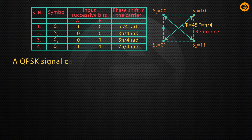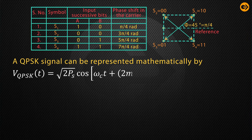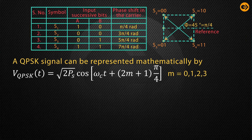A QPSK signal can be mathematically represented by: V_QPSK(t) = √(2Ps) · cos(ωc·t + (2m+1)·π/4), where m = 0, 1, 2, 3, and Ps is the power of the symbol.